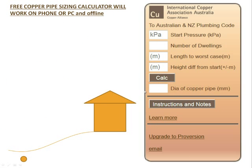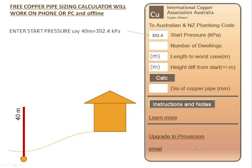Let's look at how to use this free version of the copper pipe sizing calculator. We start by entering a pressure — start pressure up here. We're going to choose 40 meters. There's a graphical representation going on over here.